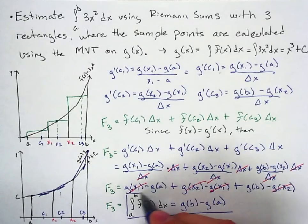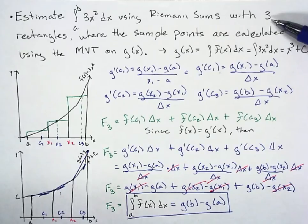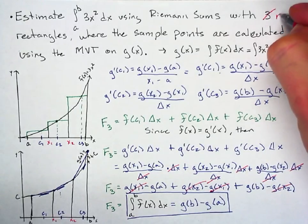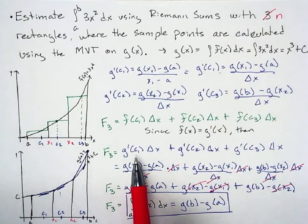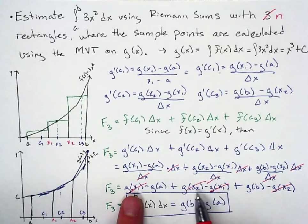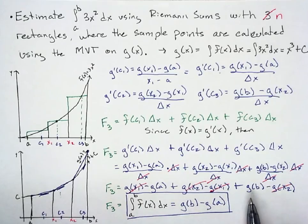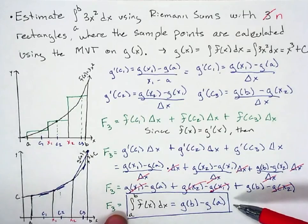What we've done here is an approximation, but if you extrapolate this work to n rectangles instead of just 3, you'd have n MVT equations — but every delta x would still cancel, and all intermediate g values would still telescope away, leaving g(b) − g(a). Then if you take the limit with an infinite number of rectangles, the approximation becomes exactly equal to the definite integral — and it's still g(b) − g(a). That's why this is the Fundamental Theorem of Calculus.